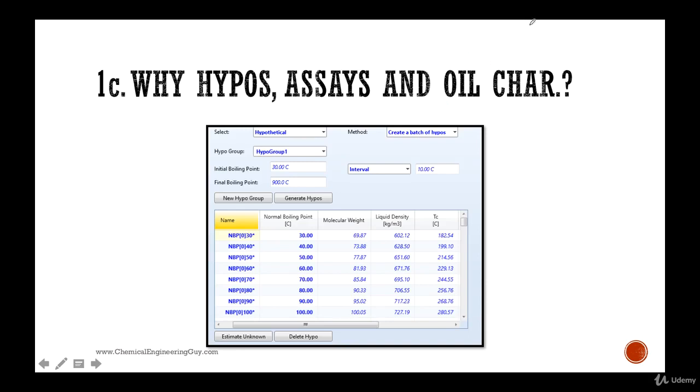What we will learn eventually is that we use pseudo components or hypo components which are present right here. They have some properties, they are modeled by Aspen Hysis, which is awesome. Instead of us actually modeling some substances, Aspen Hysis will do this work for us - will calculate critical properties, densities, molecular weights, normal boiling points, and so on.